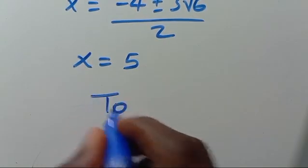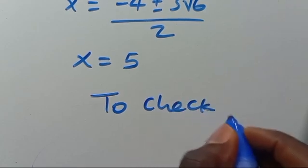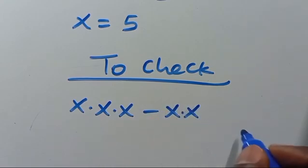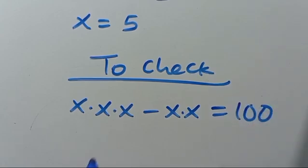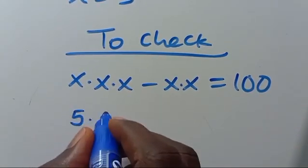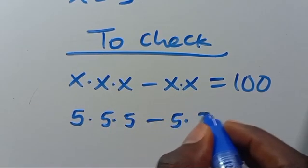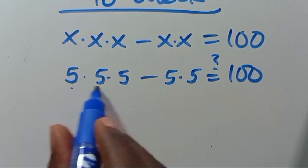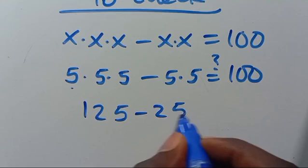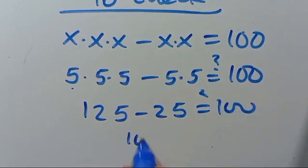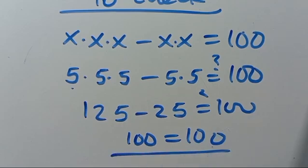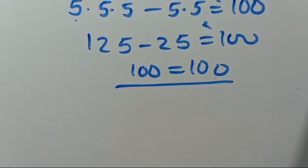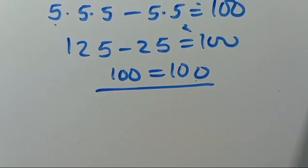To check: we have X times X times X minus X times X times X equals 100. Substituting X equals 5: 5 times 5 times 5 is 125 and 5 times 5 is 25, so 125 minus 25 equals 100. This equals 100, so the answer satisfies the equation. If you are new here, don't forget to share, like, comment and subscribe to our YouTube channel for more math tutorial videos. Bye bye.